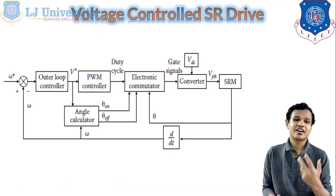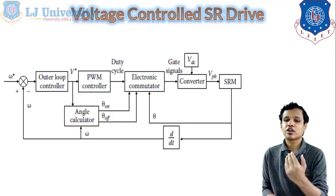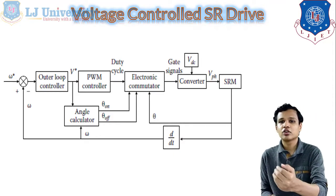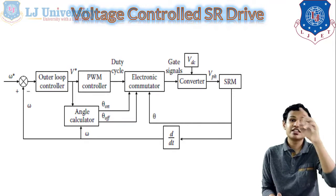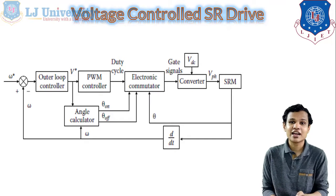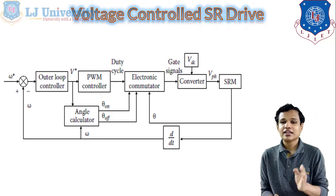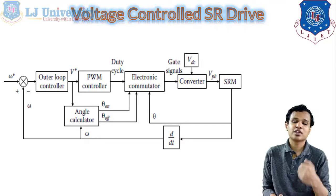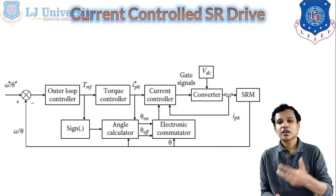Next is the voltage-controlled SR drive, in which controlling is done by voltage control. An open-loop controller is connected to a PWM controller, then an angle calculator computes the angles of the stator blades. An electric commutator is then connected to the converter, and the signal is given to the electric commutator which provides the indication to the SRM according to the control requirement.